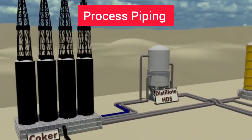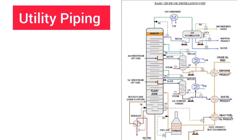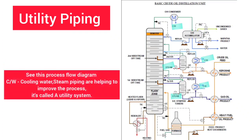Similarly, utility piping refers to the pipelines which are not directly used for the process output, but help in supplying other necessary substances to the process, such as steam, plant air, nitrogen, utility water, cooling water, and so on.